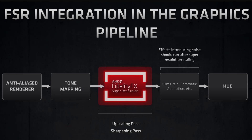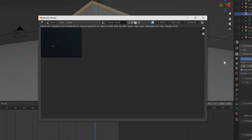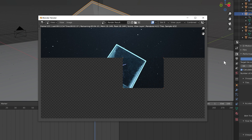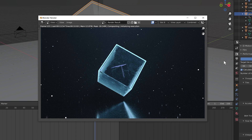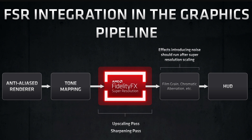AMD's FSR works differently. Instead of a complex proprietary system involving specific hardware, it is simply an additional step in the existing graphics pipeline. Even better, they're going to be making it open source so all developers can make use of it. Here's an example using Blender to help visualise what happens: first the basic image is rendered, then additional effects are applied on top — in this case bloom, but in the case of FSR it's upscaling and sharpening. No fancy tensor cores needed and no time spent training AI.